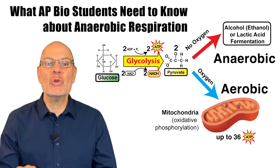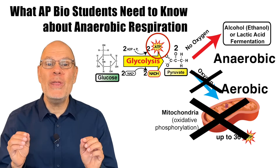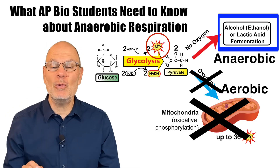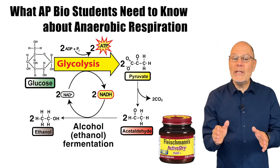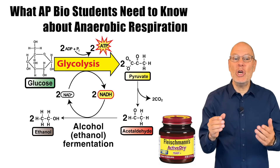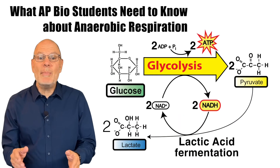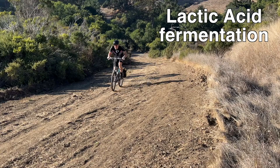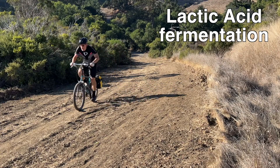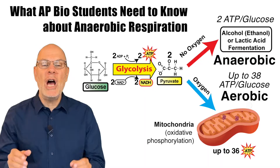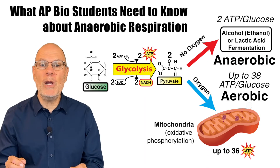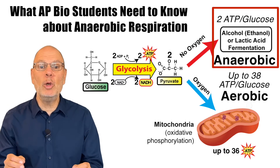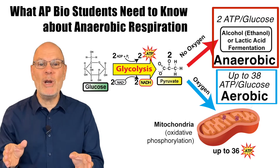Anaerobic respiration occurs when cells create ATP without the use of oxygen. You typically have to know two anaerobic metabolic pathways. One type, alcohol fermentation, occurs in yeast. A second type, lactic acid fermentation, occurs in animals when they can't deliver enough oxygen to their cells to power aerobic respiration. A key point about anaerobic respiration is that it generates much less ATP per molecule of glucose than aerobic respiration does.